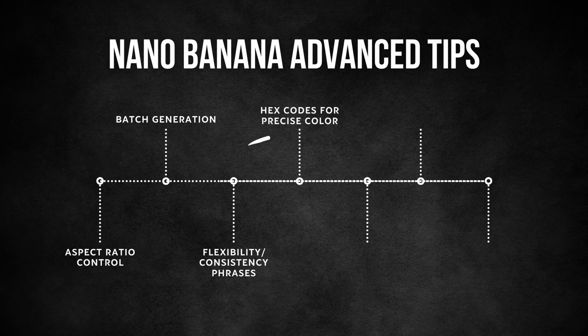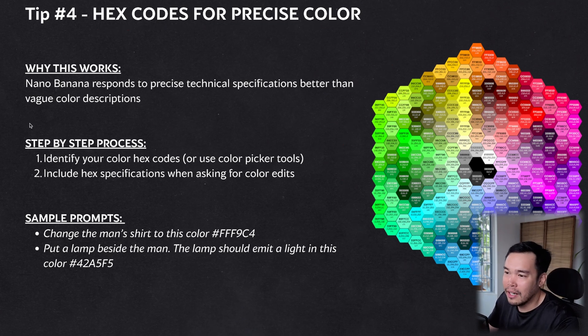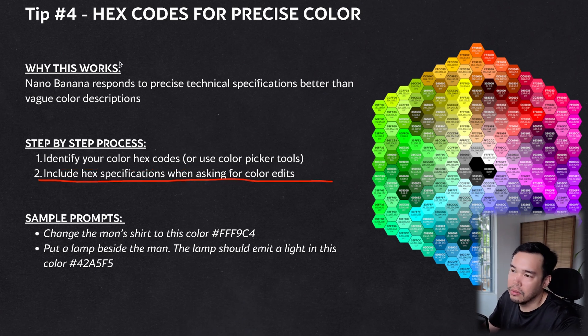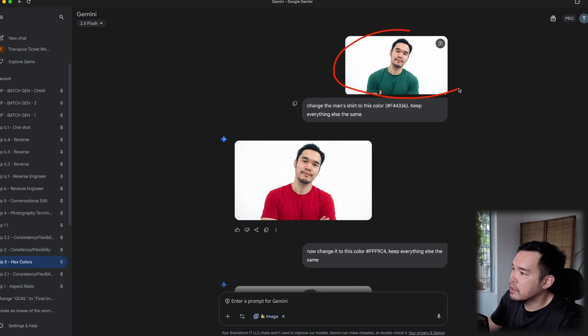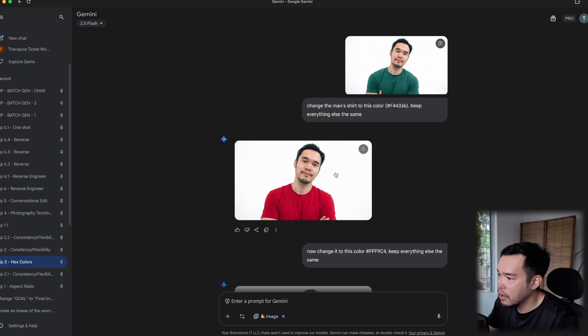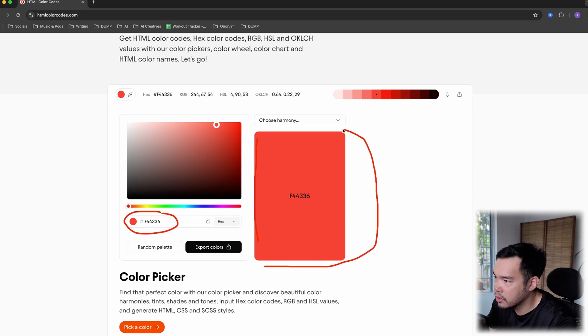But what if you want accurate color in your edits? Tip 4 is to use hex codes for precise color. Implementing this is super simple — identify your hex codes and include the hex specifications when asking for color edits. Language models respond to precise technical color specifications better than vague descriptions like 'red' or 'yellow.'